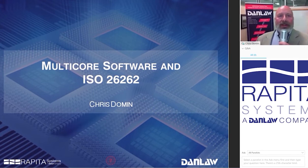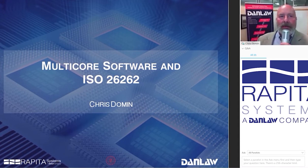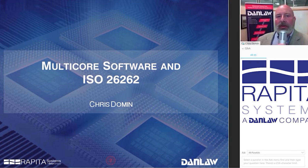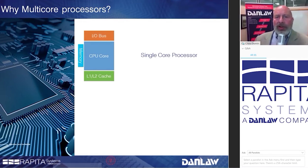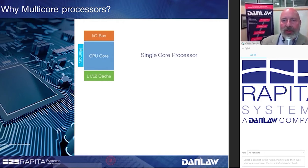We're going to present some technical background on software development and testing for multi-core processors. The first question that probably comes up is: why do you need to do this in the first place? Most everyone developing automotive software is familiar with single-core processors used on embedded control modules. It's pretty simple — you've got a central CPU core that executes code, an I/O bus to connect it to the outside world, caches connected to the core, and of course memory.